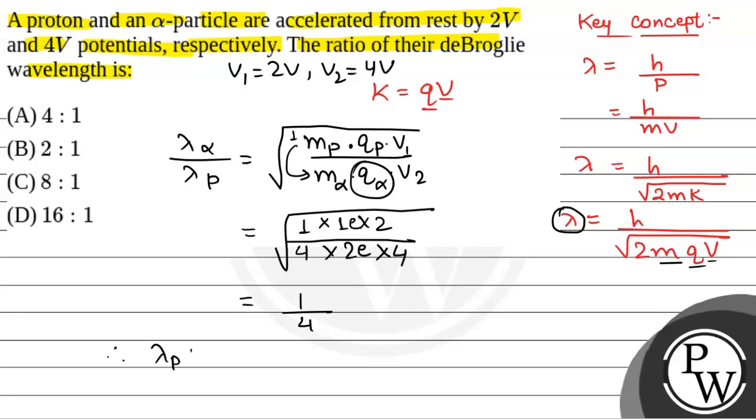Therefore, lambda proton to lambda alpha particle will be equal to 4 is to 1. So the correct option will be option A, 4 is to 1.